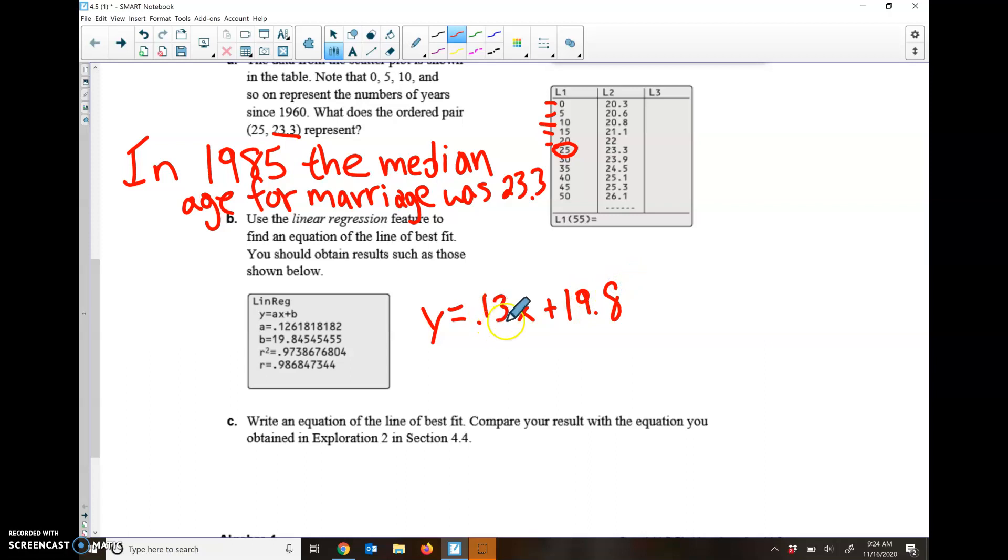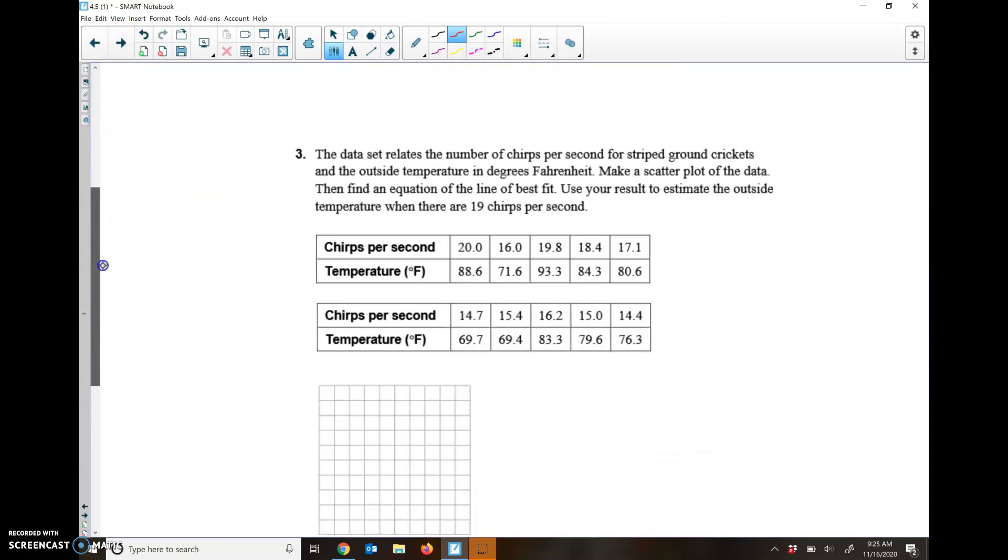If we wanted to figure out how many years passed 1960, we can put that number in here, times it by 0.13, add it to 19.8, and we can figure out what the average age or what the median age was.